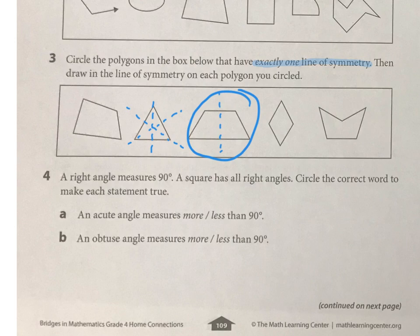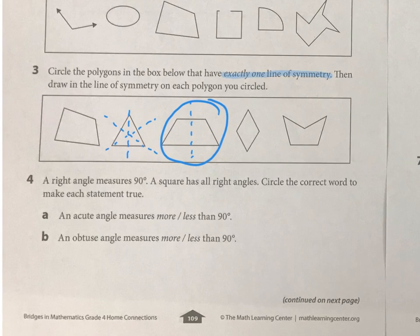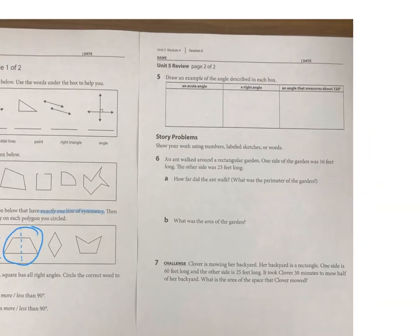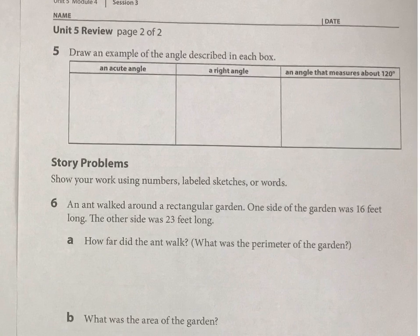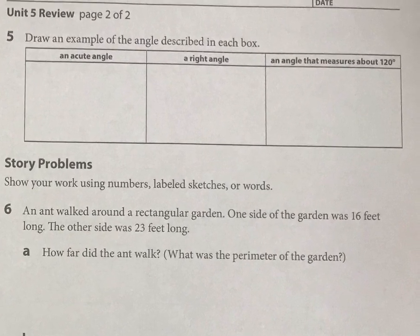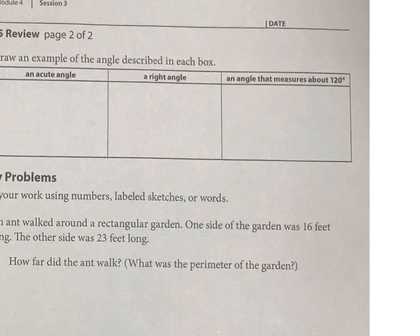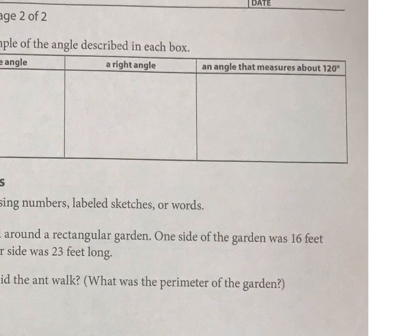Obtuse and acute angles — you just need to circle which word makes the statement correct. If you forgot, you can look it up. And then we're going on to draw them. Can you draw an acute angle and a right angle?